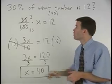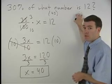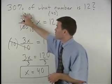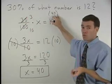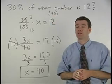Well we know that 100% of 40 would be 40. So 30% of 40 should be a lot less than 40. So 12 seems to make sense.